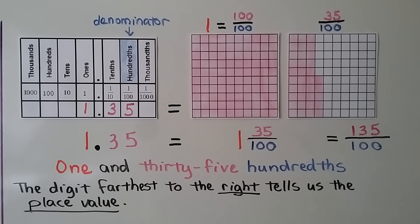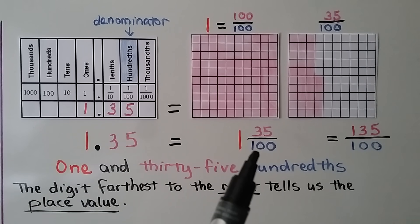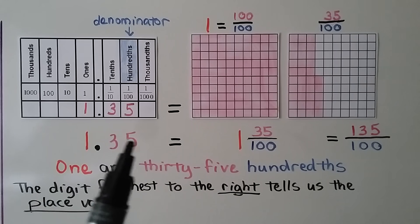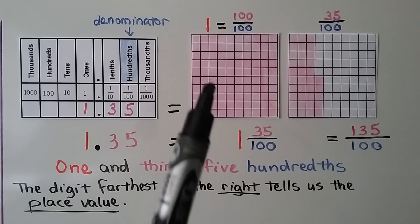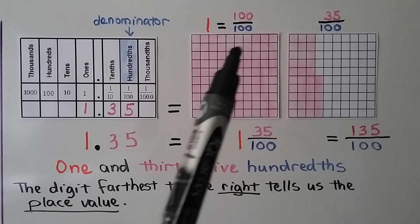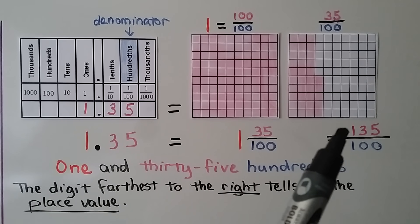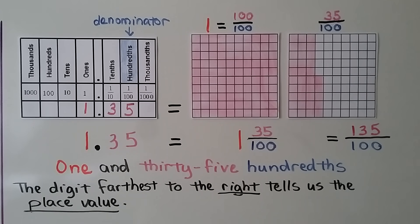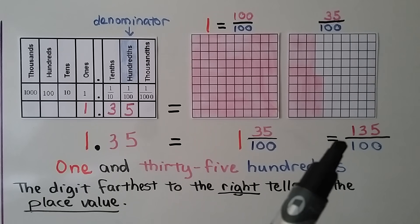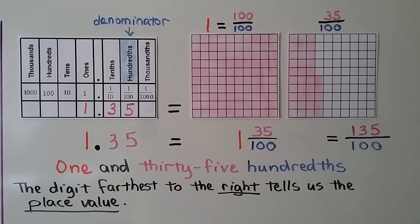We have 1 and 35 hundredths. The digit farthest to the right tells us the place value: the 5 is in the hundredths place, so we know our denominator will be 100, and 35 were shaded out of 100. The 1 whole means that 100 of the 100 areas were shaded — same numerator and denominator, so it equals 1 whole. So we have 100 plus 35 more; that's 135 shaded in all. We could say we have 135 hundredths, which is a fraction greater than 1. We can take out 100 hundredths and make it into 1 whole, with 35 hundredths as the fraction part of the mixed number.